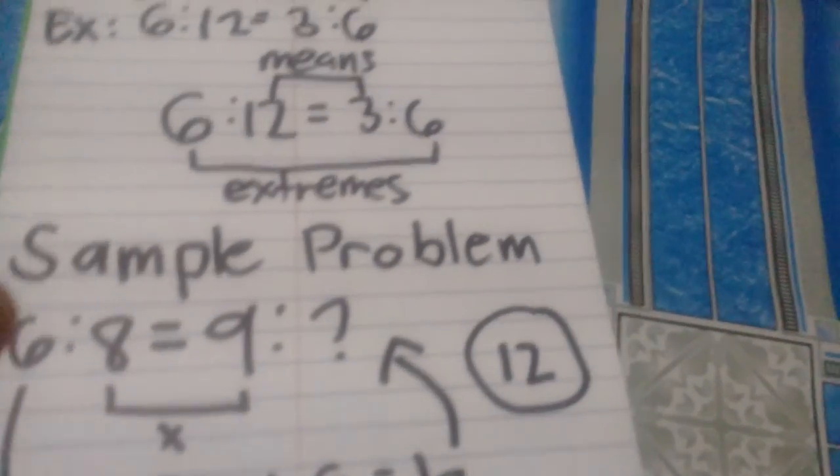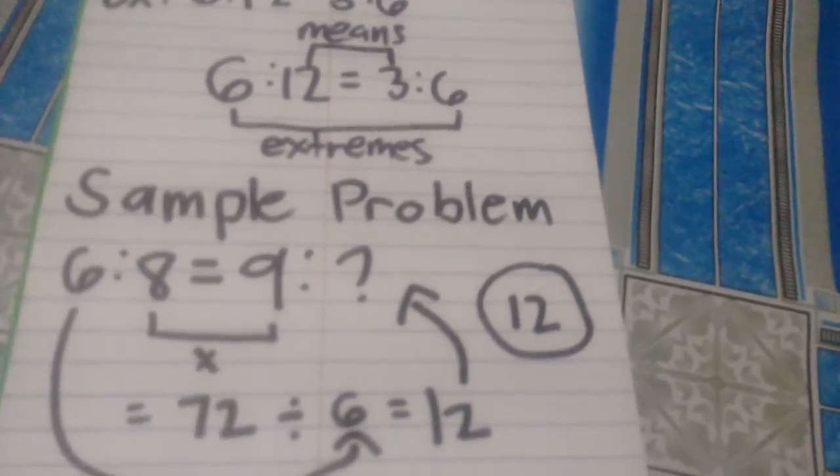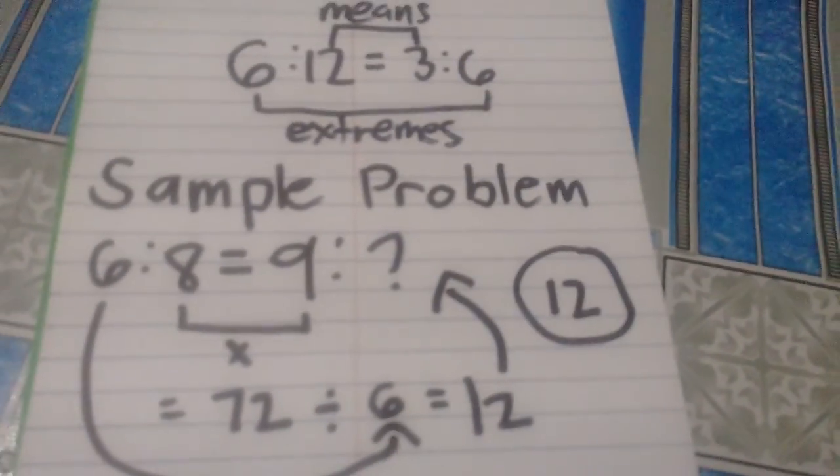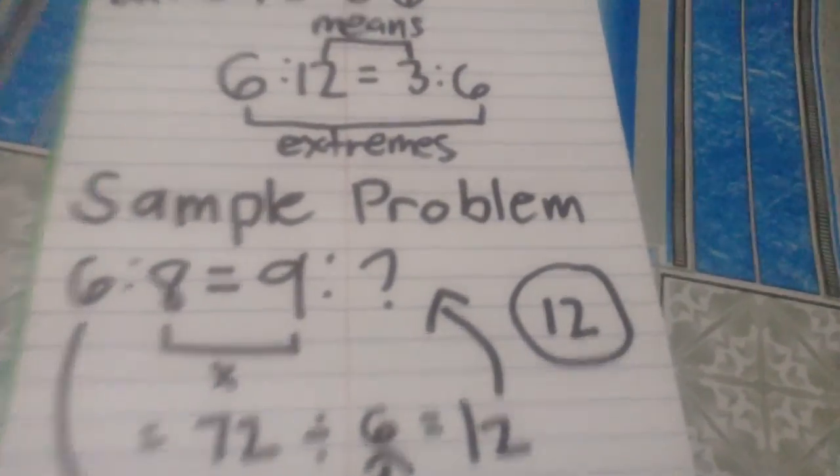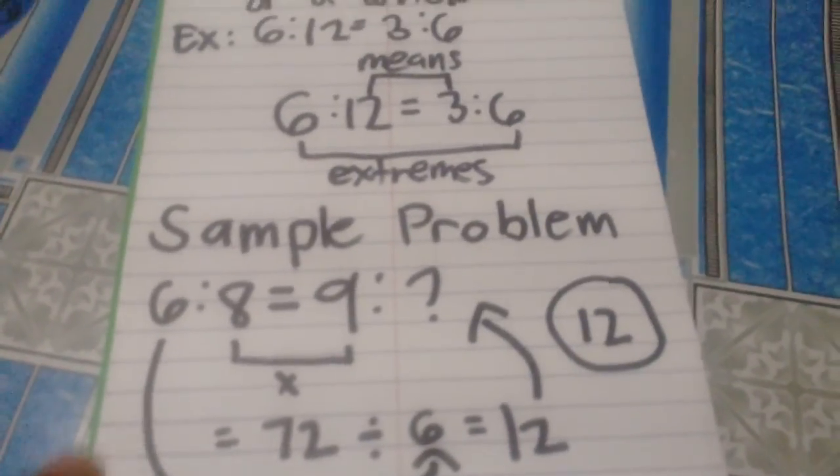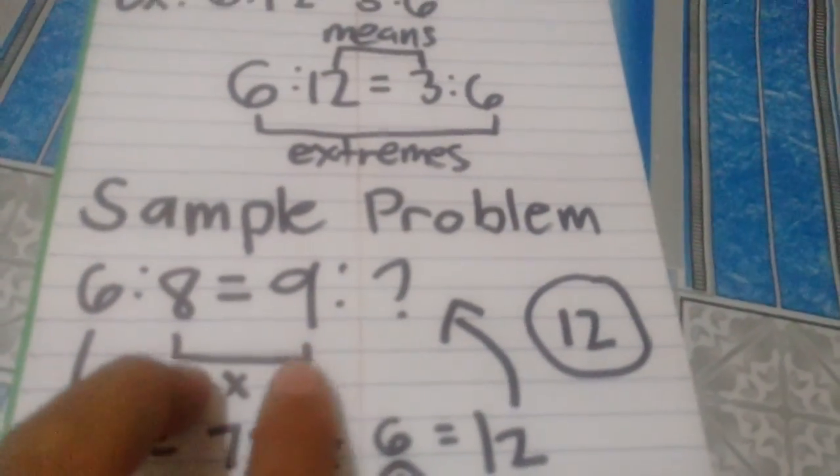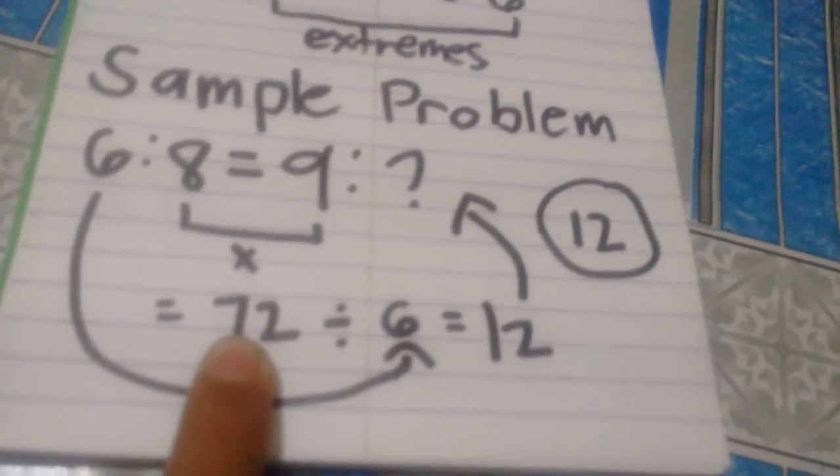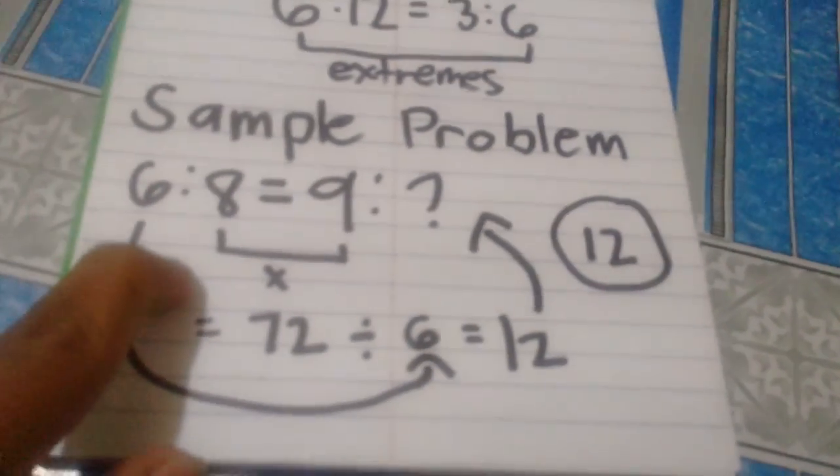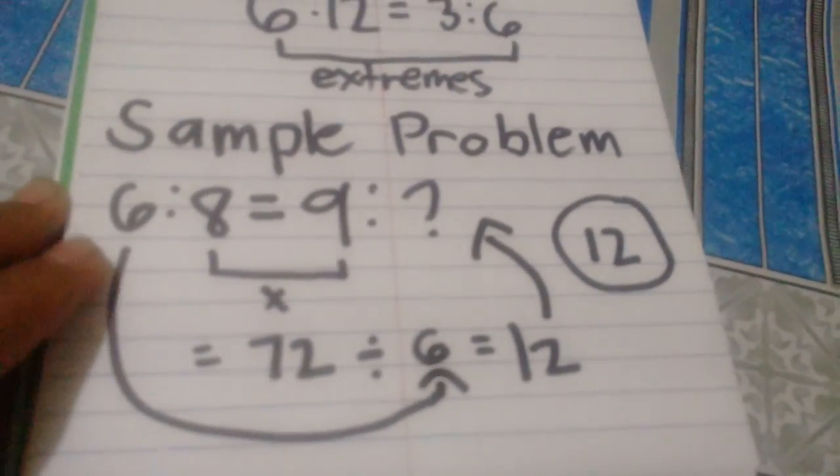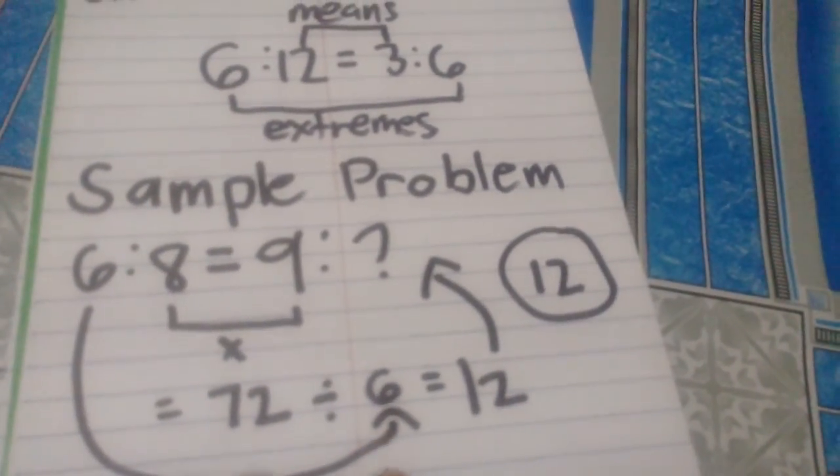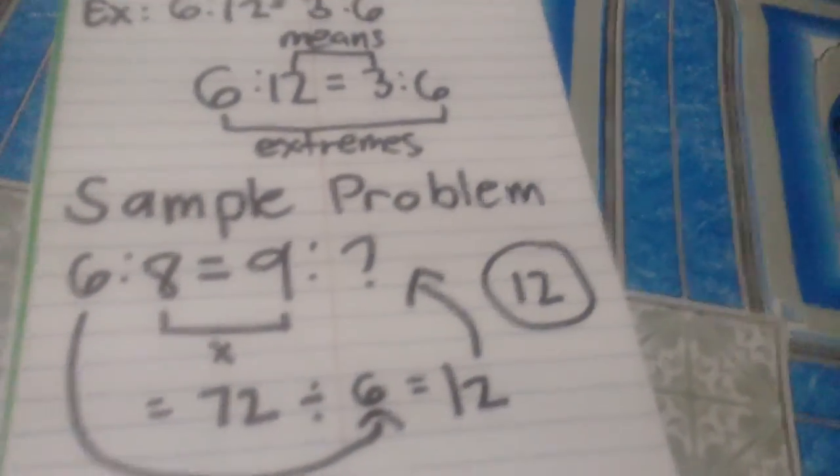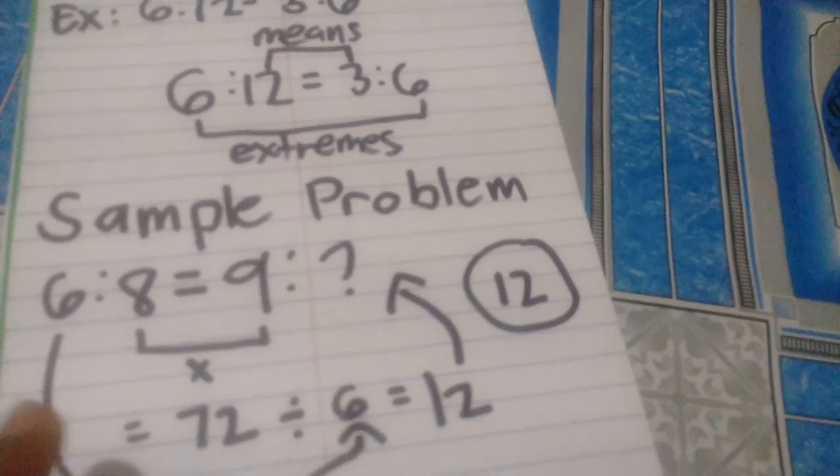Let's say that 6 is to 9 equals 9 is to blank. This question mark represents the number in the proportion that is missing. How can we find it? First, we need to multiply the means in this problem, and the answer would be 81. After that, you will divide the multiplied means by the only extreme that is present, and after that you will get the missing part of the proportion, which is 13.5.